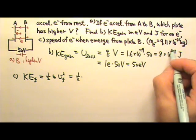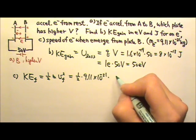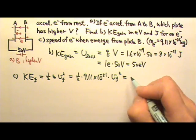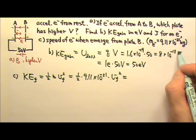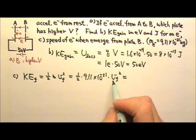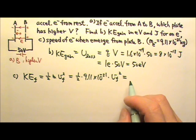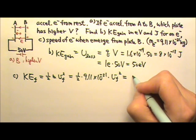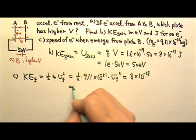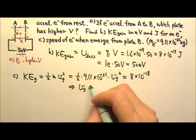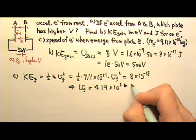One-half times the mass of the electron, 9.11 times 10 to the negative 31 kilograms, times the final speed squared equals the kinetic energy gain. We need to use standard units, not electron volts. To get speed in meters per second, everything must be in standard units. So this equals 8 times 10 to the negative 18 joules. Solving for speed, we find it is 4.19 times 10 to the 6 meters per second.